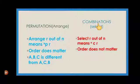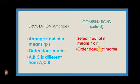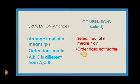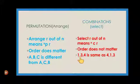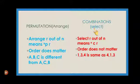Combinations means selection. If you are asked to select R things out of N objects, the notation is NCR. In combinations, order does not matter. If you take the numbers 1, 3, 4 and arrange it as 4, 1, 3 — the set 1, 3, 4 is the same as 4, 1, 3, because here order does not matter. It is only selection.